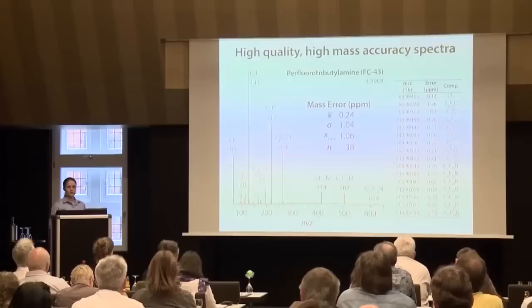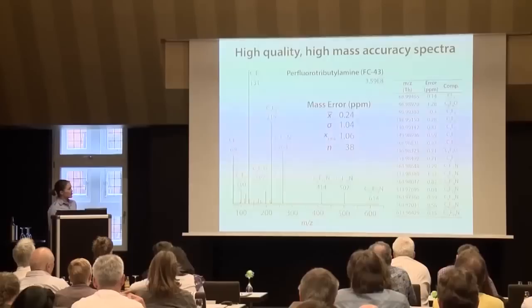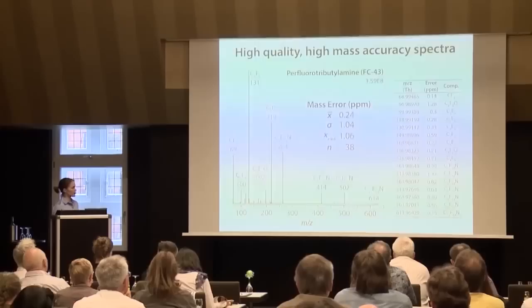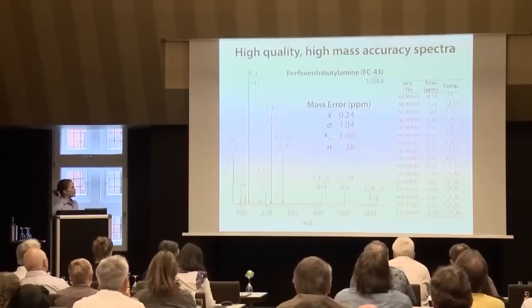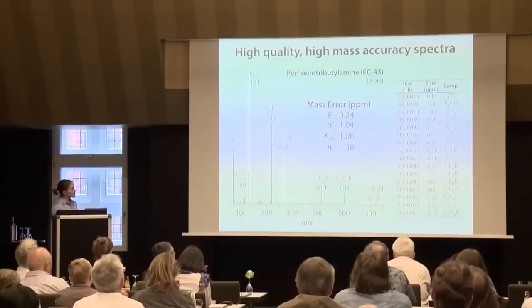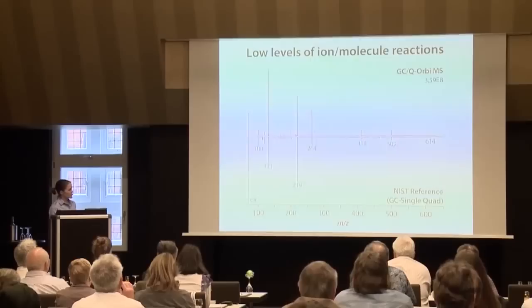The first thing we looked at was the spectrum of FC-43 — probably all know and love this compound. Here is a typical spectrum from the GC quadrupole orbitrap for FC-43. You should notice that we are operating with the same high mass accuracy as seen with other incarnations of the orbitrap mass analyzer, giving an average of less than 1 ppm. You can also notice relatively low levels of water reactions from trapping in the C-trap.